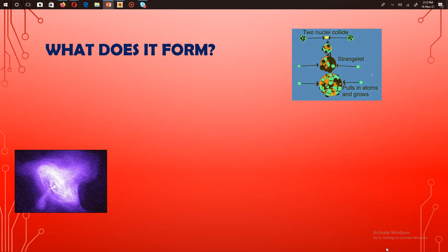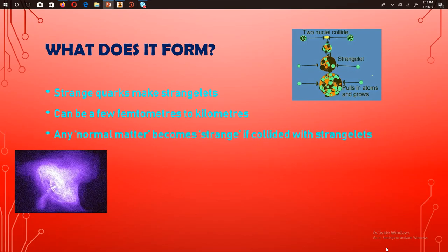So what does strange matter form? Strange quarks can make strangelets or strange particles. Strangelets can range from a few femtometers, which is way less than a centimeter, to several kilometers. Any normal matter when collided with strangelets can become strange matter. That's what makes strange matter so dangerous.